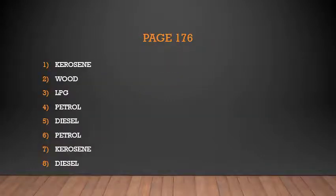On page number 176, there is an activity: with the help of your teacher or elders, write the fuels used in the following. A lamp uses kerosene. For cooking, we use wood. LPG – liquefied petroleum gas – is also used for cooking. Bikes use petrol, trucks use diesel, aeroplanes use petrol or kerosene in a different grade, rockets use kerosene, and ships use diesel.